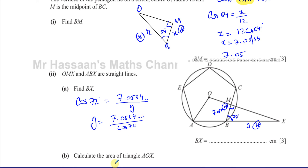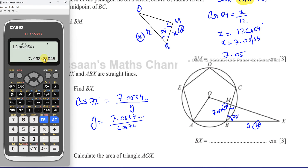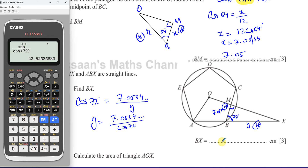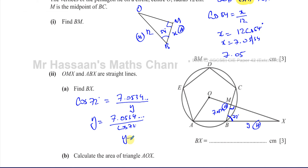I'll use the exact calculator value divided by cosine of 72. That gives us the value of BX, which is 22.825, so to 3 significant figures BX ≈ 22.8 centimeters.